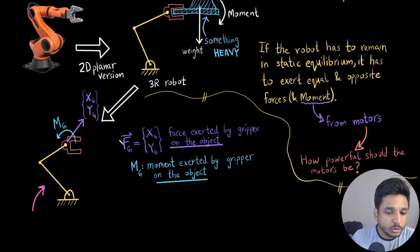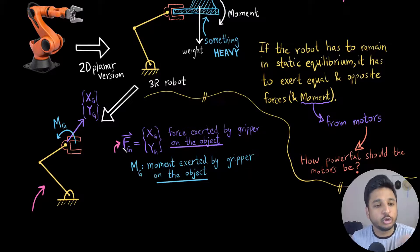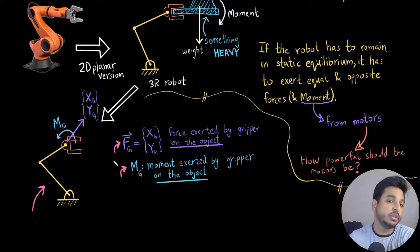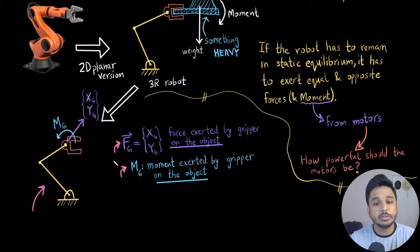So Fg, which is this one, is the force exerted by the gripper on the object. And Mg is the moment exerted by the gripper on the object, which is just going to be equal to the force that the object exerts on the gripper.